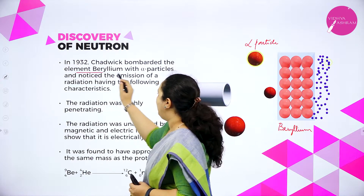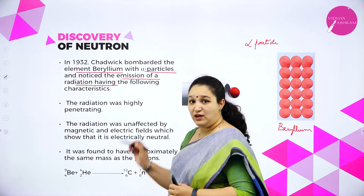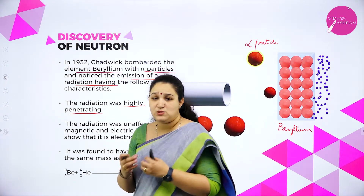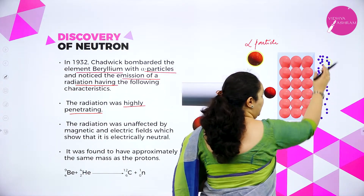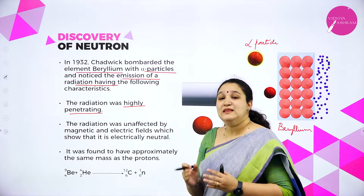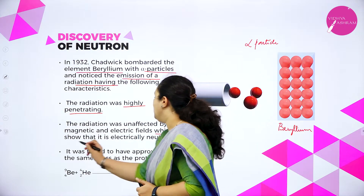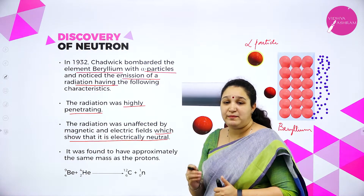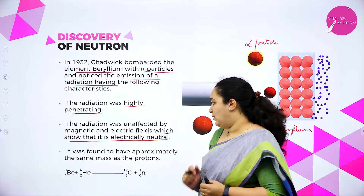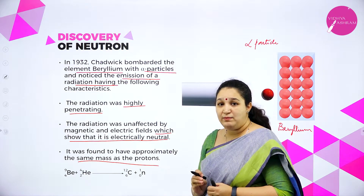Chadwick bombarded element beryllium with alpha particles and noticed emission of radiations having the following characteristics. The radiation was highly penetrating — the particles coming out of the beryllium sheet had high penetrating power. The radiation was unaffected by magnetic and electric fields, which shows that it is electrically neutral. It was found to have approximately the same mass as protons, so this was named as neutrons.